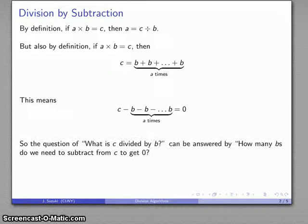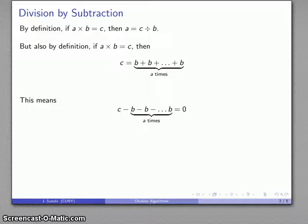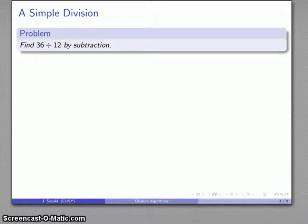So I can rephrase the question. If I want to find what is c divided by b, the question I can answer instead is: how many b's do I need to subtract before I get to zero? And this gives us division by repeated subtraction.